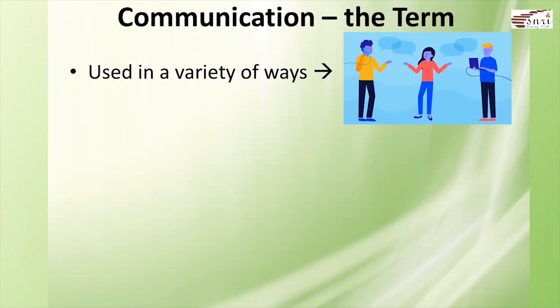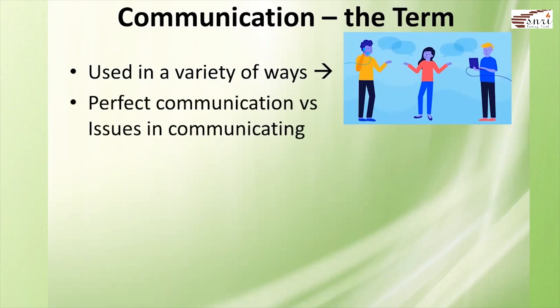When I speak of communication being used in a wide variety of ways, there are several reasons for this. Sometimes we come across something called perfect communication versus issues in communicating. Let us take an office setup. Individuals in that particular office may have a lot of difficulty in communicating or passing a message from one source to another. If the office members do not have perfect harmony among themselves, it would be very difficult to convey information and work together on a common project — that would be an example of issues in communicating.